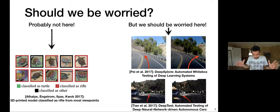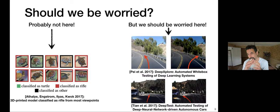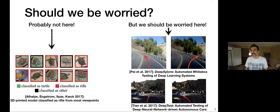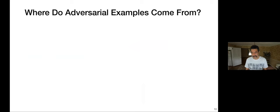Should we really be worried? Maybe not in artificial scenarios, but when it comes to human lives, yes — we should be worried. We need the means to identify these security gaps and find ways to protect machine learning systems using defense mechanisms. There are different research directions: some focus on developing new attack mechanisms, others on building defense mechanisms to make systems more resilient and robust.